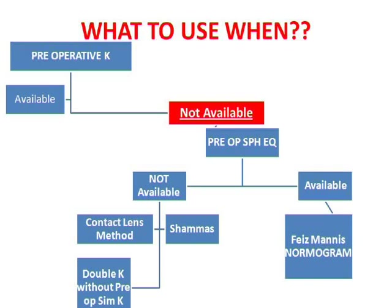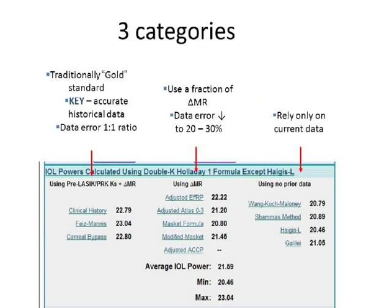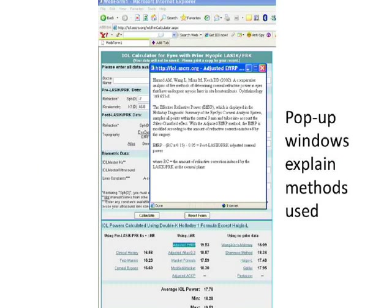When you feed the data into the ASCRS calculator, it gives you the IOL powers it has calculated and specifies the options it has used — the formulas employed — whether using pre-LASIK data and change in manifest refraction, using only manifest refraction, or using no prior data. At the bottom it displays the average IOL power, minimum and maximum. As Dr. Kumar already mentioned, you always try to aim slightly myopic so you don't end up with a hyperopic refractive surprise. The ASCRS will also pop up a window explaining what techniques were used, giving you a clear picture of what is being applied for your patient.